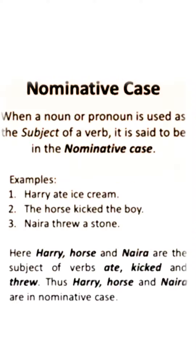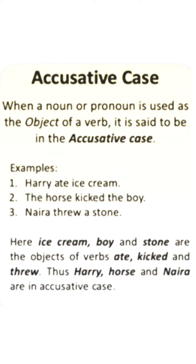Did you know which are the cases of noun in English grammar? Nominative case: when a noun or pronoun is used as the subject of a verb, it is said to be in nominative case. Examples: Harry ate ice cream. The horse kicked the boy. Naria threw a stone. Here Harry, horse, and Naria are the subjects of verbs ate, kicked, and threw. Thus Harry, horse, and Naria are in the nominative case.